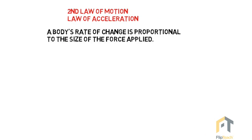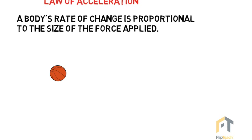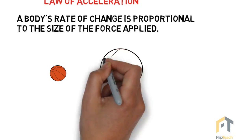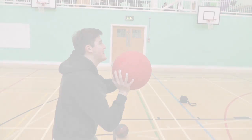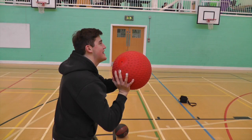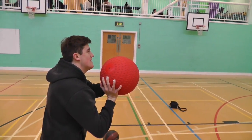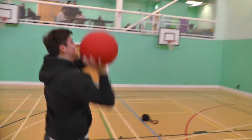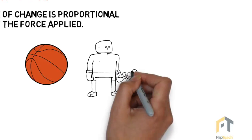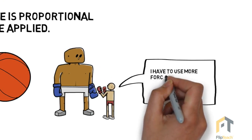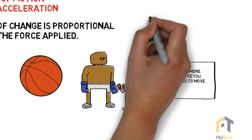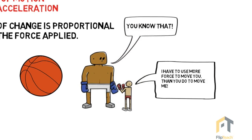The second law of motion is the law of acceleration: a body's rate of change is proportional to the size of the force applied to it. In a practical sense, if we have a small basketball and throw it with a certain amount of force it'll go quite a long way, but if we throw a larger ball with the same force it won't go as far. Because the ball is larger, you're going to have to apply more force to get it to accelerate at the same rate. So the smaller person is going to have to use significantly more force to move the larger person than vice versa.